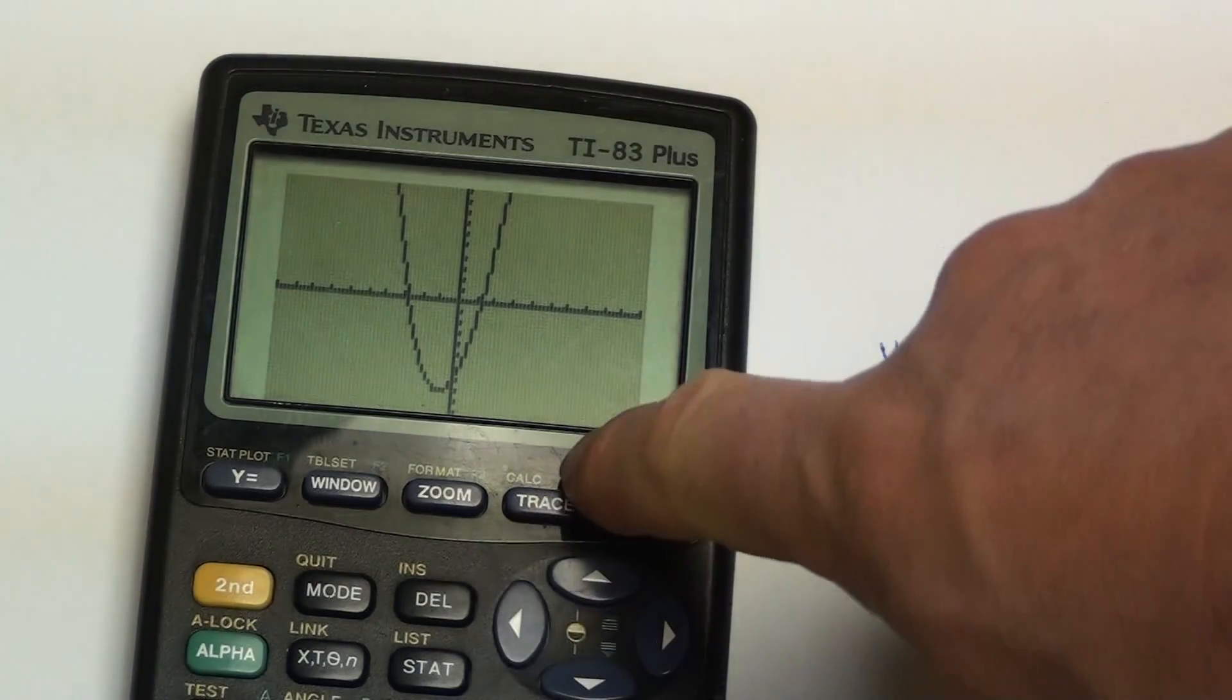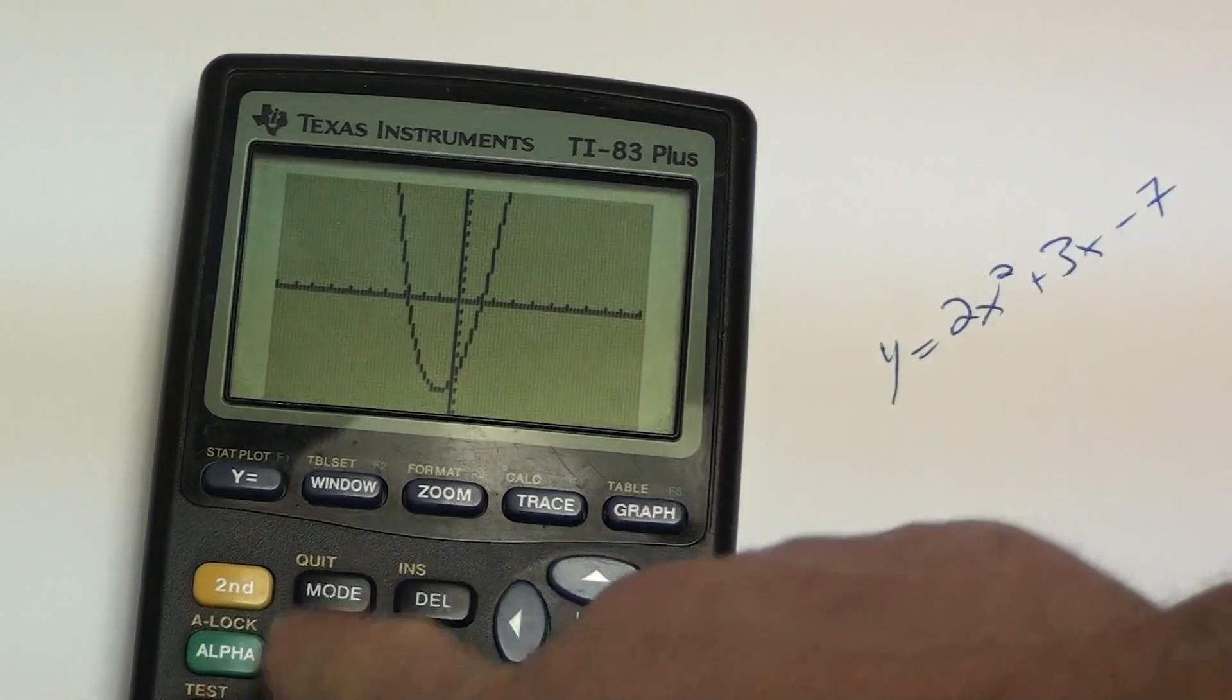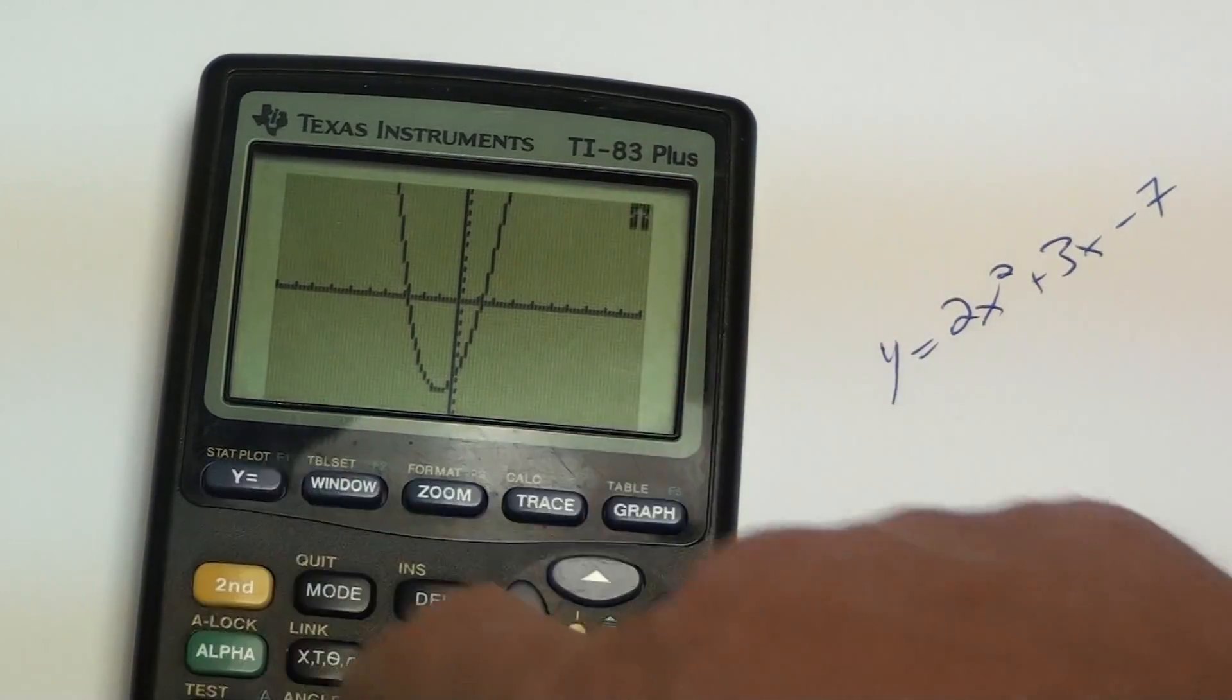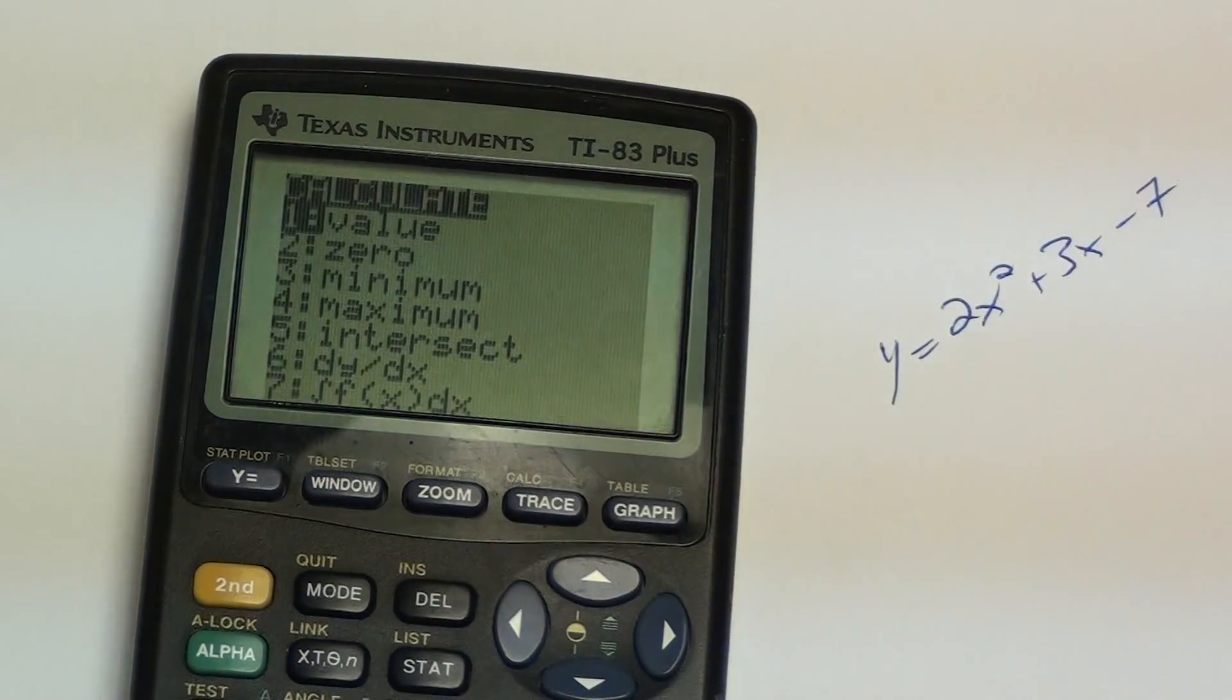So above the trace button, you have the calc. That's where I'm going to go into. I have to hit the second button, second feature button to get into that. Second calc.